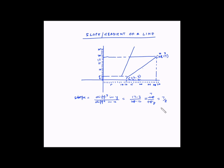We could also have done (3 − 17) divided by (12 − 28). Whichever way we do it, we need to follow the same sequence while doing the subtraction. This gives us −14 divided by −16. The negatives cancel, so this becomes 7 divided by 8 — the same answer.